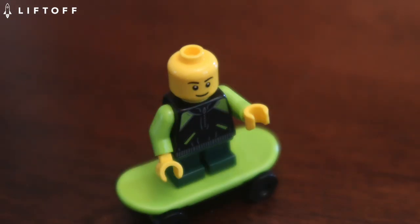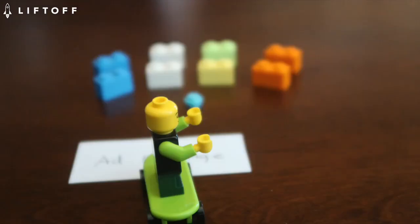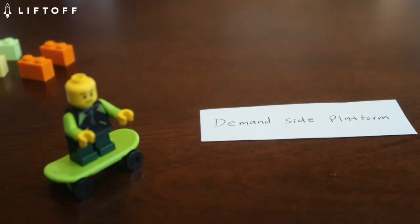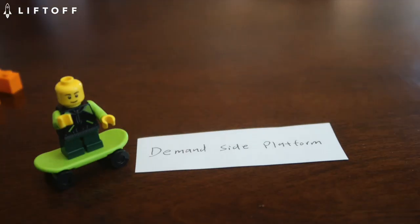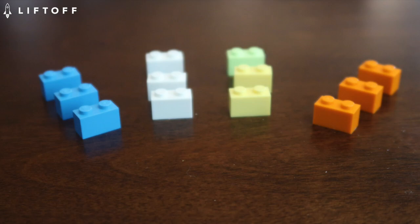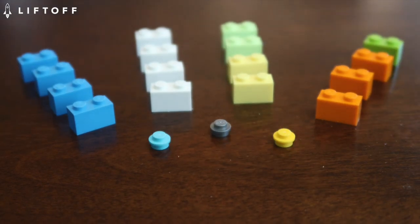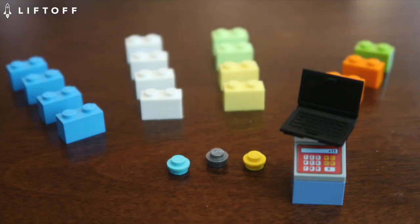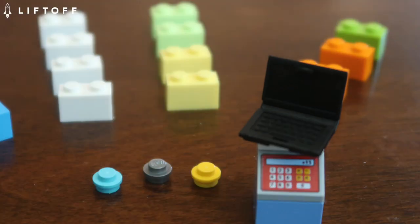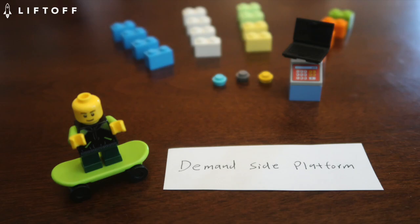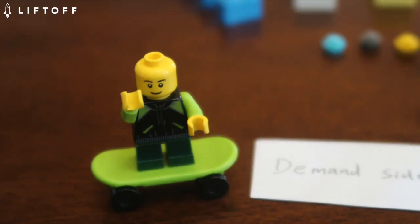And finally you have the demand side platform, also known as DSP. A DSP is a tech platform that helps you buy across multiple ad exchanges. DSPs use powerful tech like machine learning to help you make smarter buying decisions. This is great if you want to buy intelligently and get even more scale. The downside is that you will need to trust that their tech works.